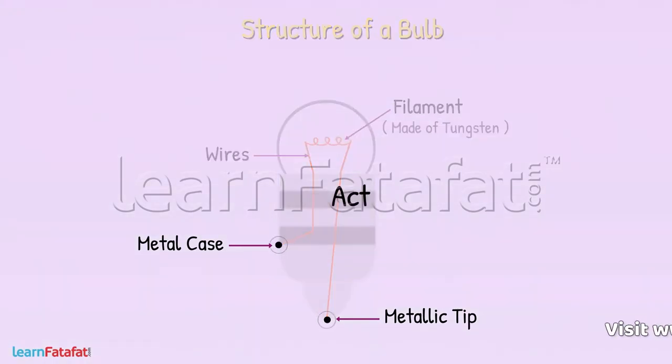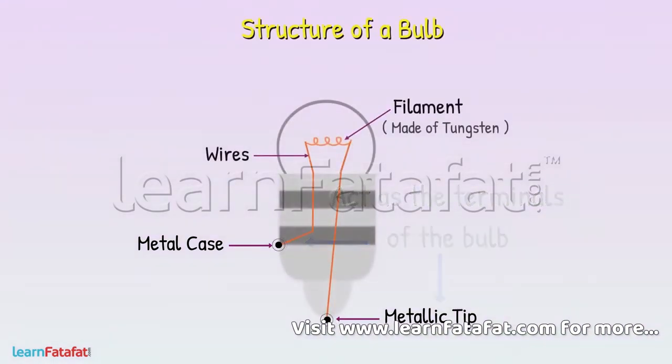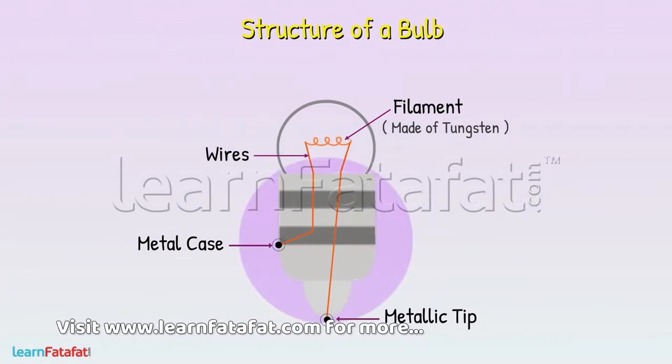These two parts act as the terminals of the bulb. They are separated from each other with some non-conducting material.